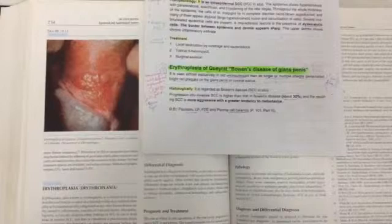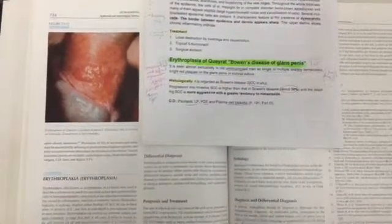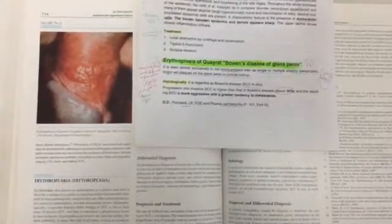Erythroplasia of Kira, or Bowen's disease of glans penis, shows 30% development to squamous carcinoma. It occurs almost exclusively in uncircumcised old men, presenting as single or multiple sharply demarcated bright red plaques on the glans penis or coronal sulcus.